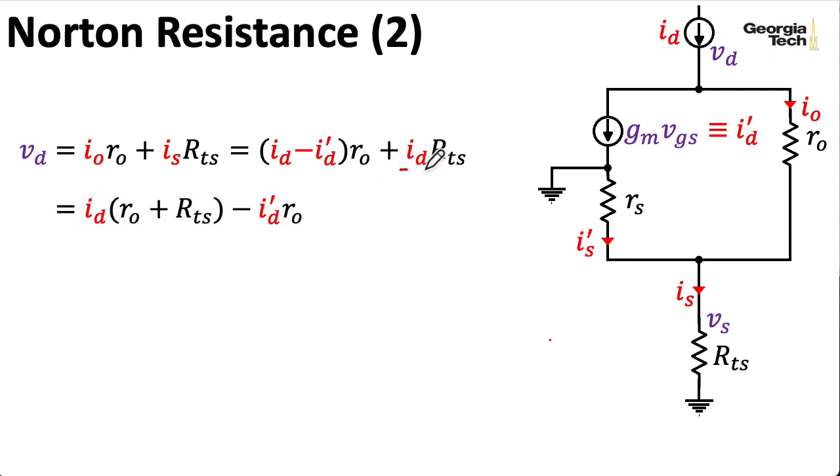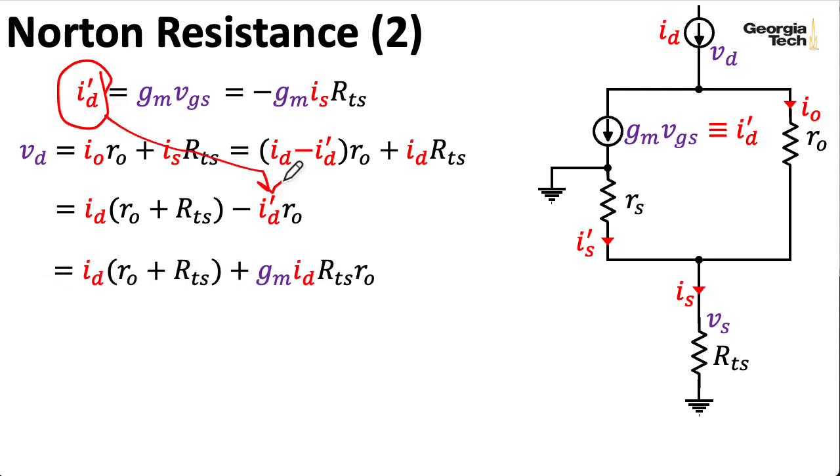Now I'm going to group the terms with ID, which gives me this here. ID prime is the transconductance times the gate source voltage. And the gate is at zero volts. So I can just subtract the voltage at the source in order to write VGS. And the voltage at the source is just Is times RTS. Now taking this expression for ID prime and plugging it into here gives me this expression. And I can now compute the Norton equivalent resistance by dividing the voltage by the current. And when I do that, the currents wind up canceling, and I can rearrange the expression like this.